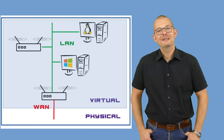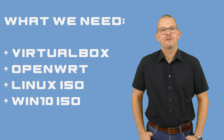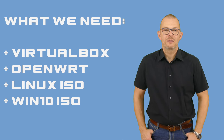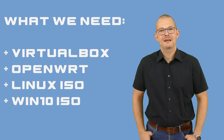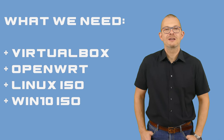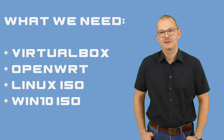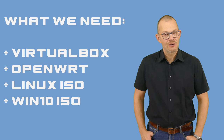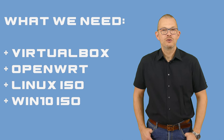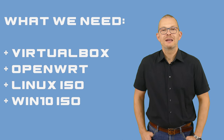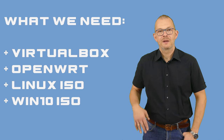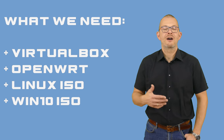Furthermore we need some images. Here's what we will need: the VirtualBox software, which you can download from Oracle's website; an OpenWrt image for the x86 processor, which you can download from the OpenWrt website; a Linux installer file – I will use Ubuntu or Debian, downloadable from a Ubuntu or Debian mirror; and a Windows 10 ISO file that we will download from Microsoft. The links to the download locations are in the description.